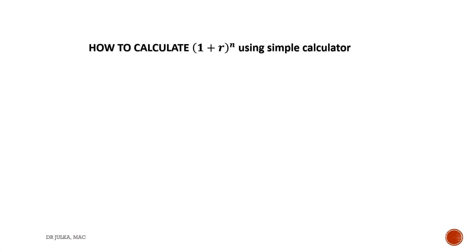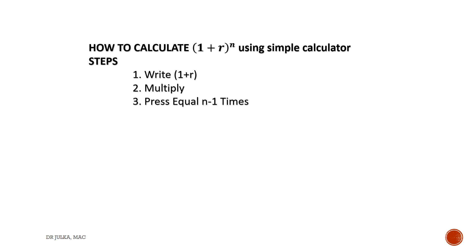How to calculate 1 plus R whole raised to the power N using a simple calculator. If you have a dual-digit calculator, you can simply calculate 1 plus R whole raised to the power N. The steps are: write 1 plus R in your calculator — for example, if the rate of interest is 8%, write 1.08. Then press multiply only once. And press equals N minus 1 times. For example, if you want to calculate 1.08 to the power of 5, N is 5 and N minus 1 is 4, so press equals 4 times.